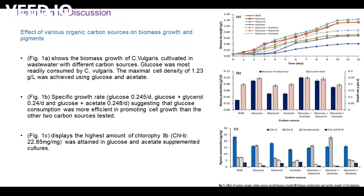Result and Discussion. In Figure 1, the effect of various organic carbon sources on biomass growth and pigment are described. Figure 1a shows the biomass growth of C. vulgaris cultivated in wastewater with different carbon sources. Glucose was most readily consumed by C. vulgaris; the maximal cell density of 1.23 g/L was achieved using glucose and acetate. Figure 1b shows the specific growth rate of glucose plus glycerol and glucose plus acetate, suggesting glucose consumption was more efficient in promoting cell growth than the other two carbon sources tested. Figure 1c displays the highest amount of chlorophyll attained in glucose and acetate supplemented culture.